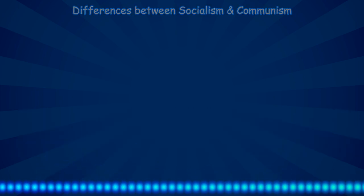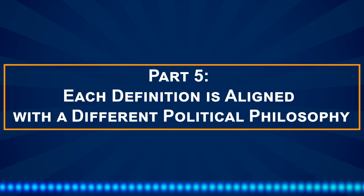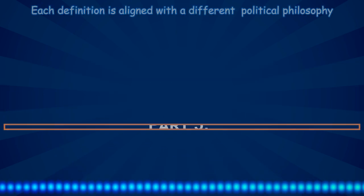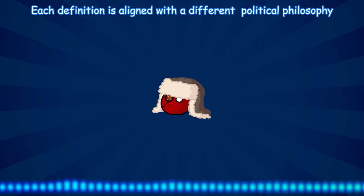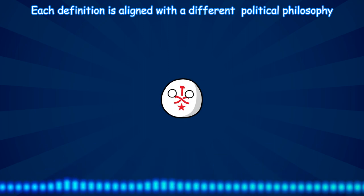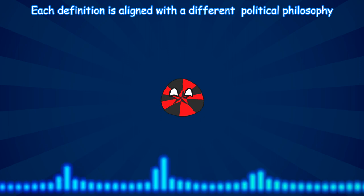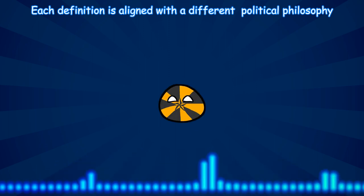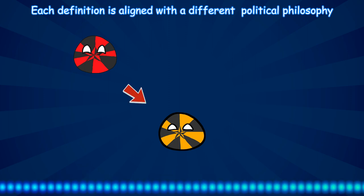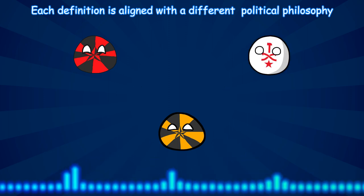Each definition of socialism is aligned with a different socialist political philosophy. Orthodox Marxist-Leninists say that a socialist economy is planned by the state. But market socialists say that socialism should be a market economy. Libertarian socialists say no to both — socialism should not be controlled by the state or by markets. Then there are libertarian market socialists, who are a subtype of libertarian socialists and also a subtype of market socialists — but while most libertarian socialists are opposed to the market, libertarian market socialists are pro-market, and while most market socialists think the state should play some role in the economy, libertarian market socialists are anti-state.